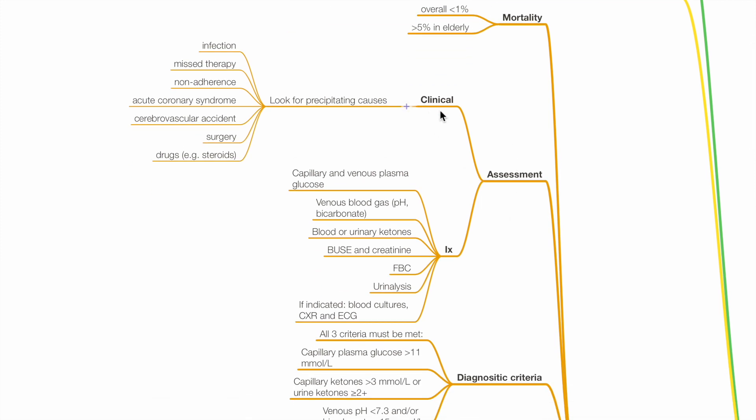Assessment: Clinical assessment aims for looking for precipitants such as infection, missed therapy, non-adherence, acute coronary syndrome, stroke, surgery or drugs. Investigations include capillary and venous plasma glucose, VBG, ketones, U&Es, creatinine, FBC, urinalysis, and if indicated, blood cultures, chest x-ray, and ECG.